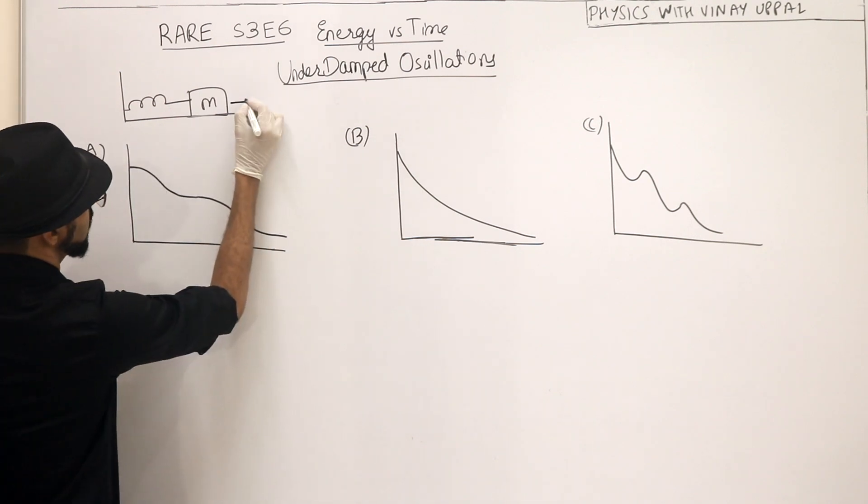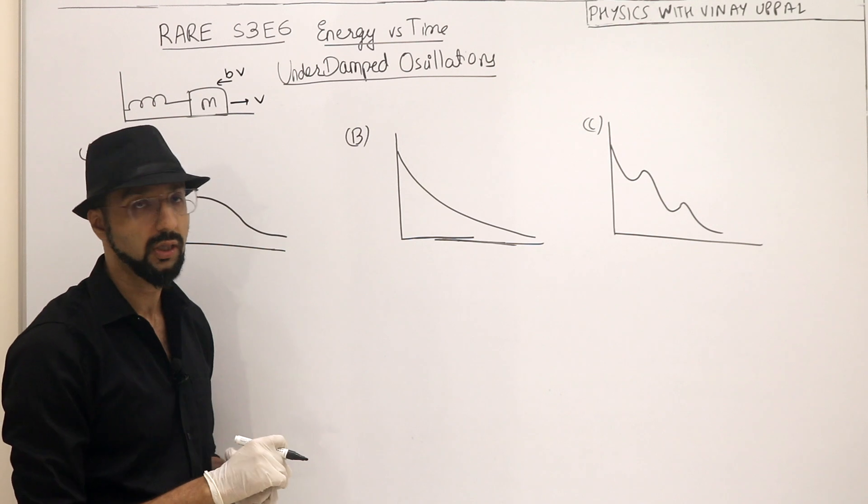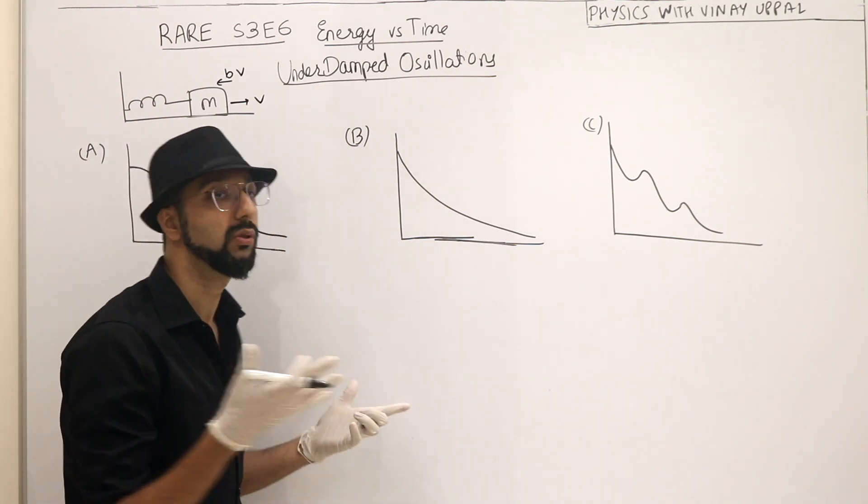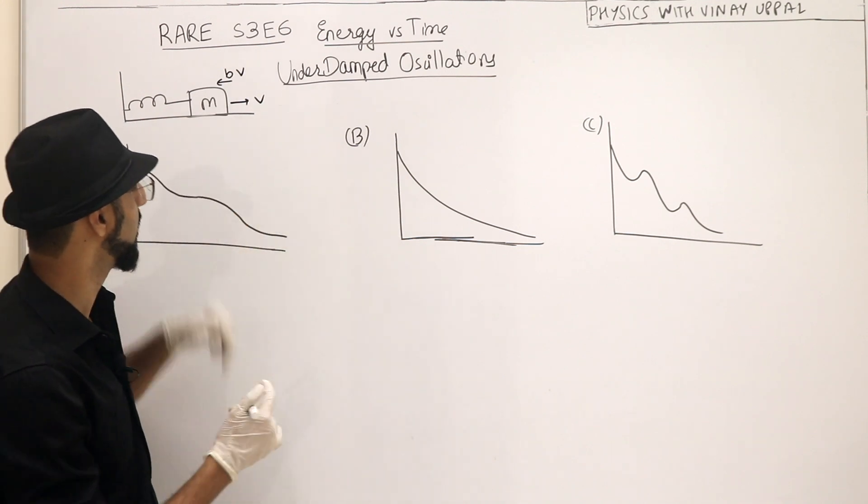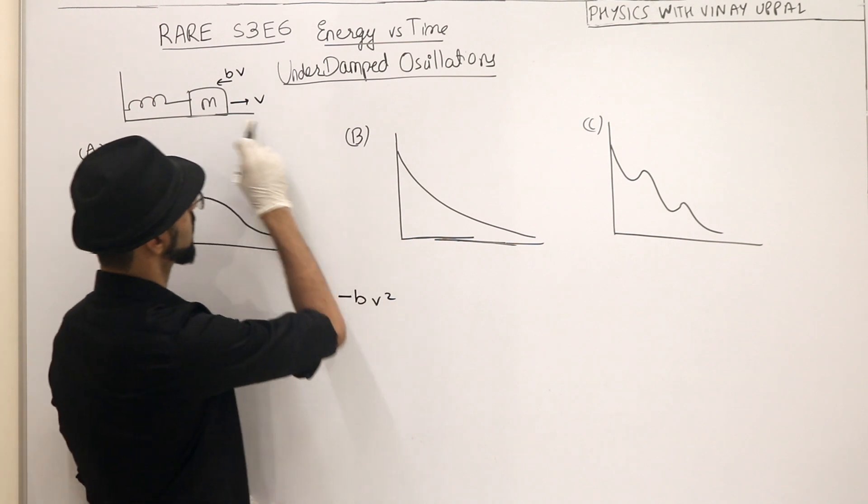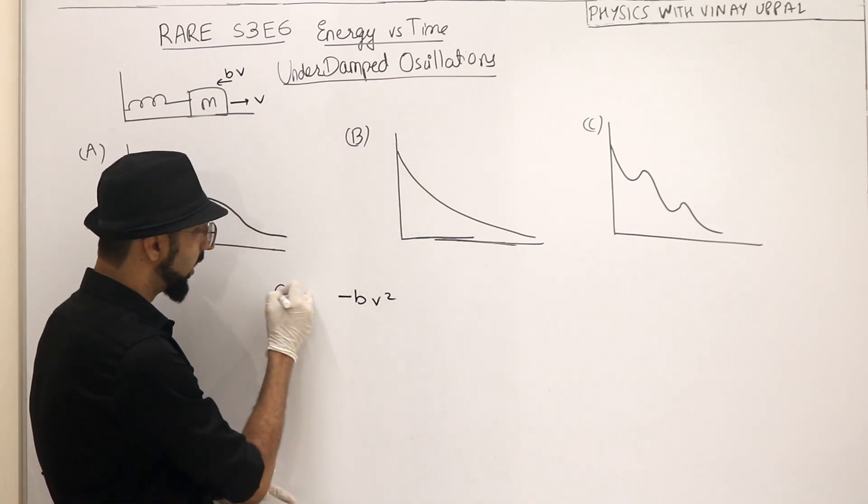Here is the damping force, suppose its velocity V is the damping force BV to the left. B is some positive constant. So what is the rate of change of mechanical energy here? Who is decreasing the energy? Who is changing the energy? BV. Its power is minus BV, its opposite, dot product F dot V, negative sign, but this is nothing but the rate of change of energy.